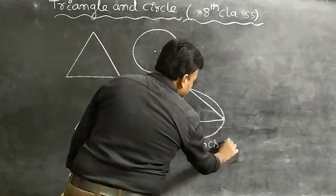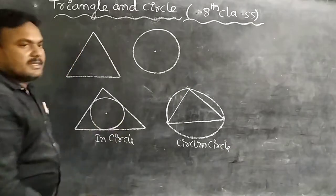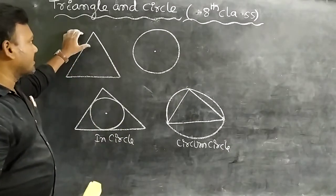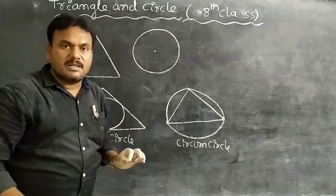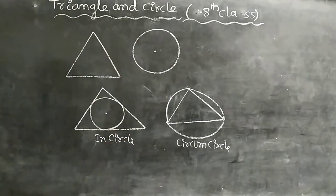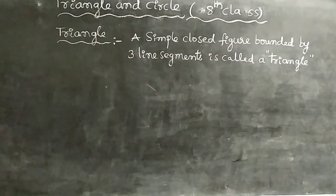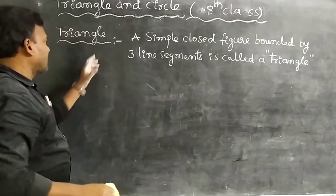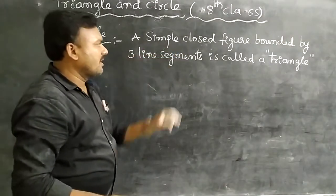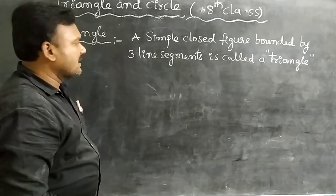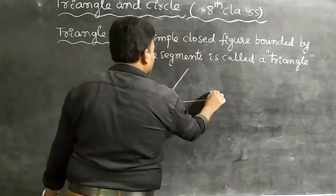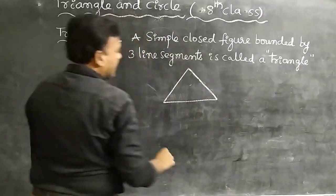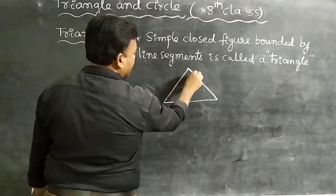This is the circumcircle and this is the incircle. I have written the definitions — all of you must enter them in your notebook. Triangle: a simple closed figure bounded by three line segments is called a triangle. Here, line segments are represented as sides.